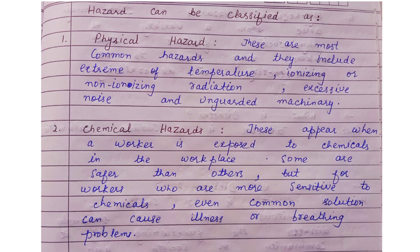Hazards can be classified into types. First is Physical Hazard — these are the most common hazards and they include extremes of temperature, ionizing or non-ionizing radiation, excessive noise, or unguarded machinery. These are very common hazards involving temperature increases, excessive noise, and machines that are not safe for human use.